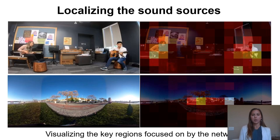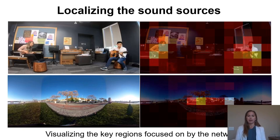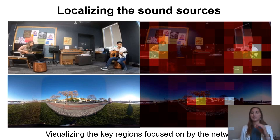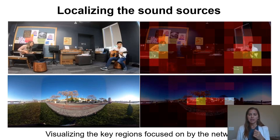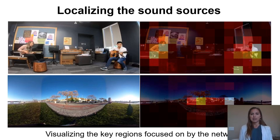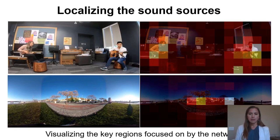We also investigated what is responsible for creating the correct binaural sound outputs. Here we show patches from a music scene and a 360 clip where, on the right-hand side, we highlight the patches which when ablated from the input would most increase the loss — in other words, the parts of the scene most responsible on the visual side for the algorithm knowing how to create spatial sound. It does indeed correspond to things we'd expect: the people, the instruments they're playing, and in the bottom clip, the road with cars.